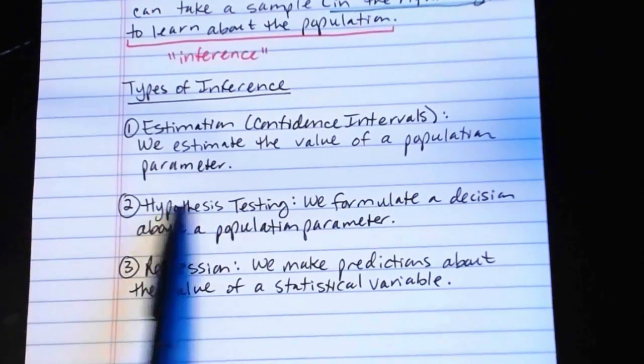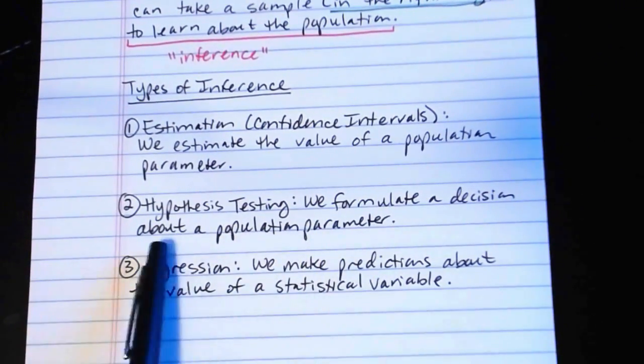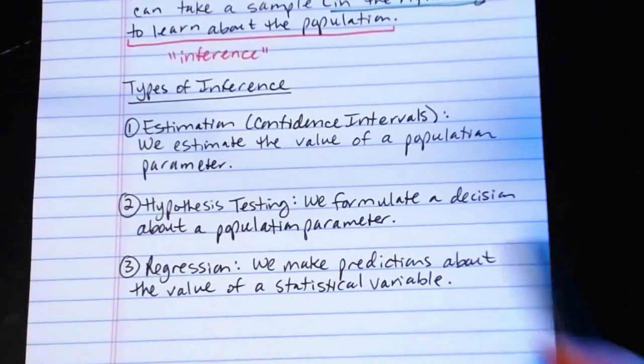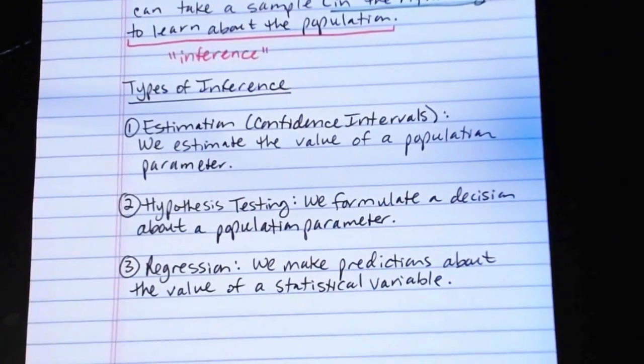If I were to take a similar scenario, but deal with hypothesis testing, where we formulate a decision about a population parameter, I might wonder to myself, has the president's approval rating increased since the State of the Union address? So again, I might take some sample data, I would start with the hypothesis, yes, the president's approval rating has increased since the State of the Union address. And then I would compare that to the data that I'm seeing in the sample to see if the sample data supports the notion of an increase, or if it does not support the notion of an increase. So I'm making a decision about a population parameter.